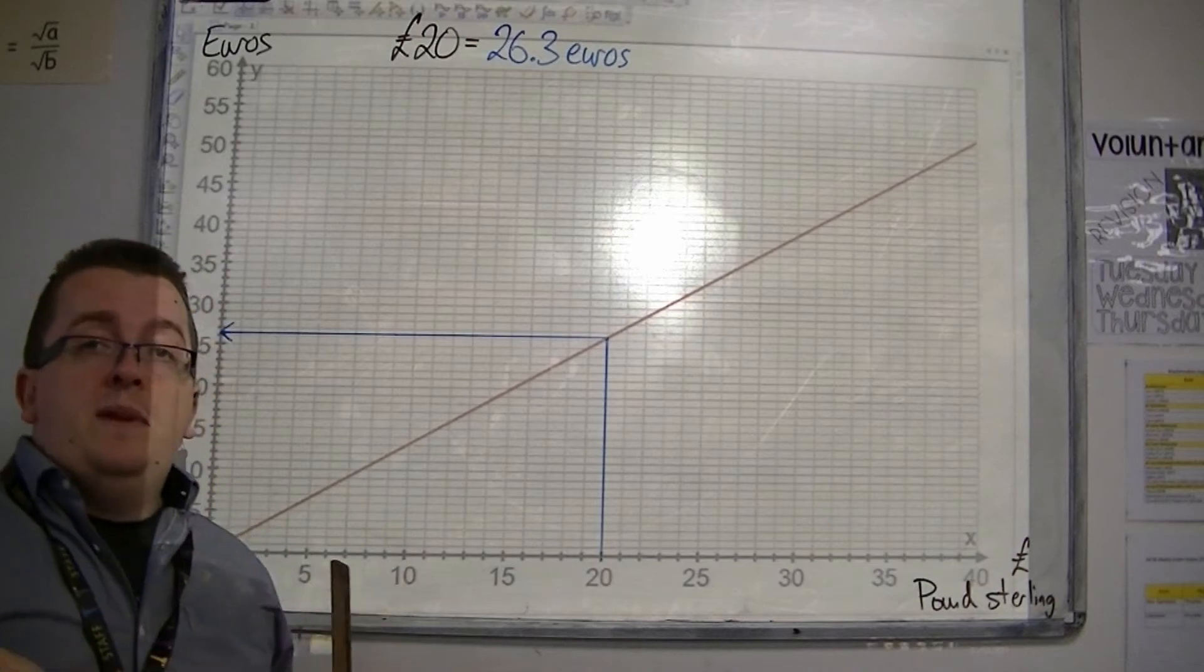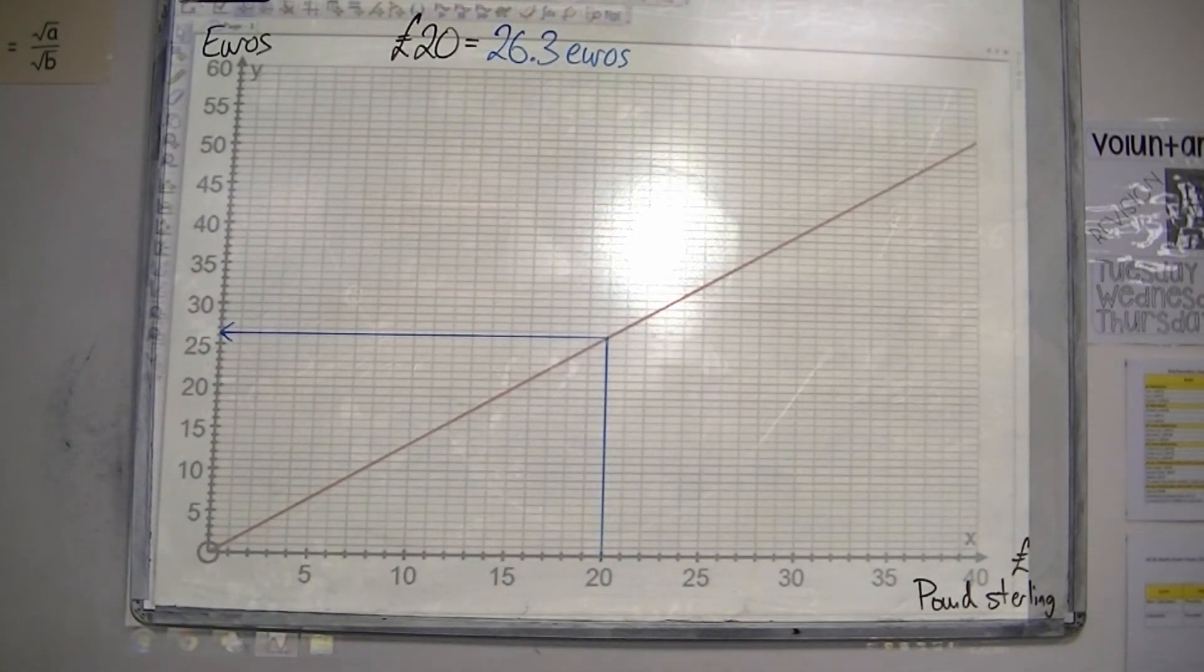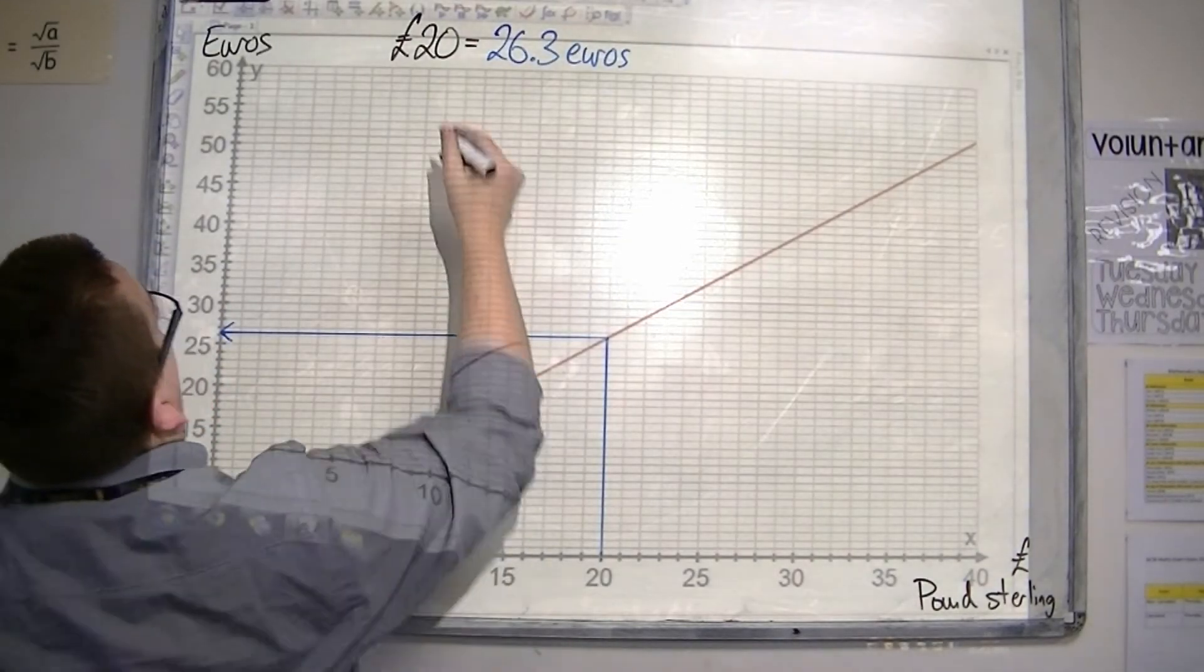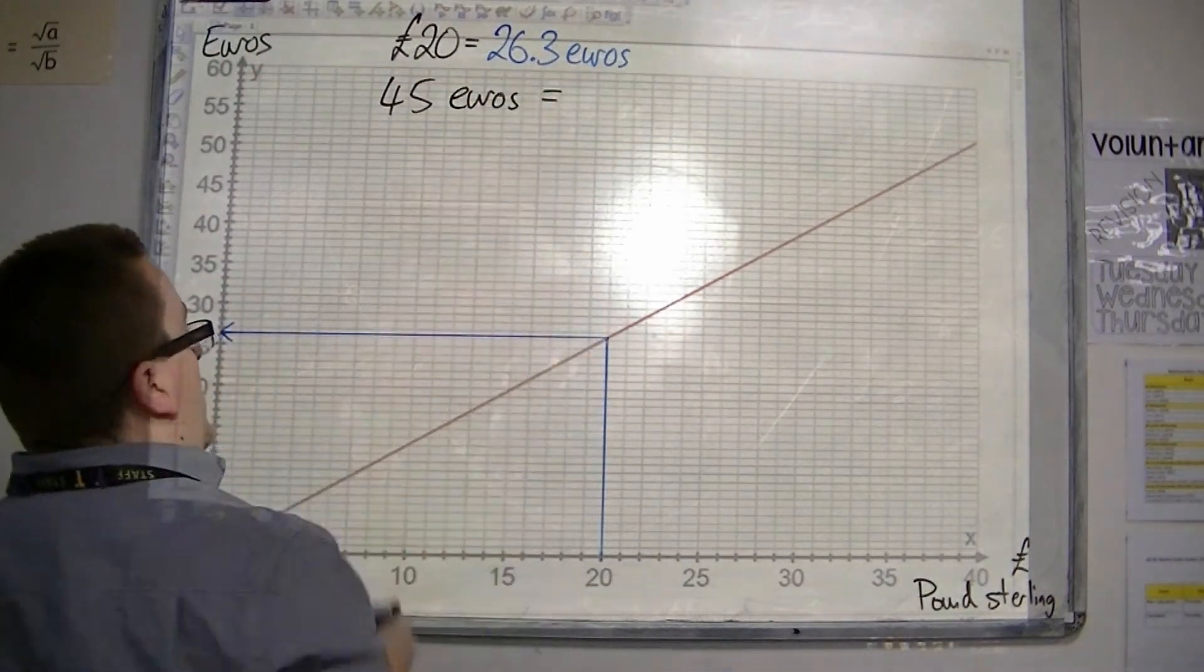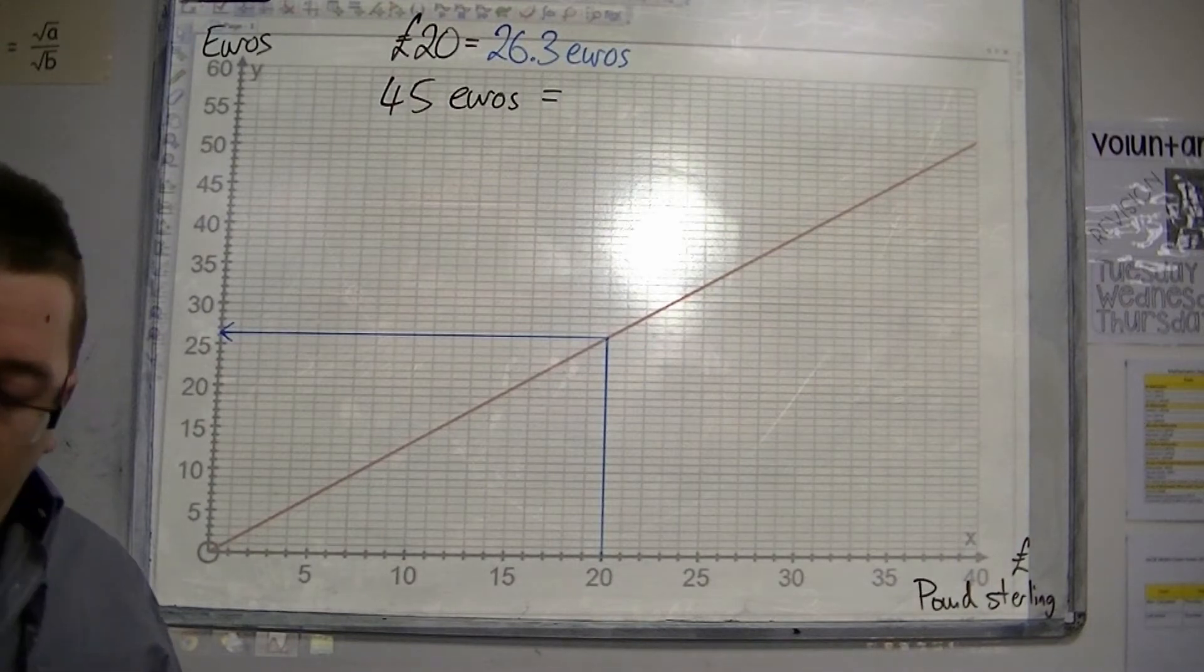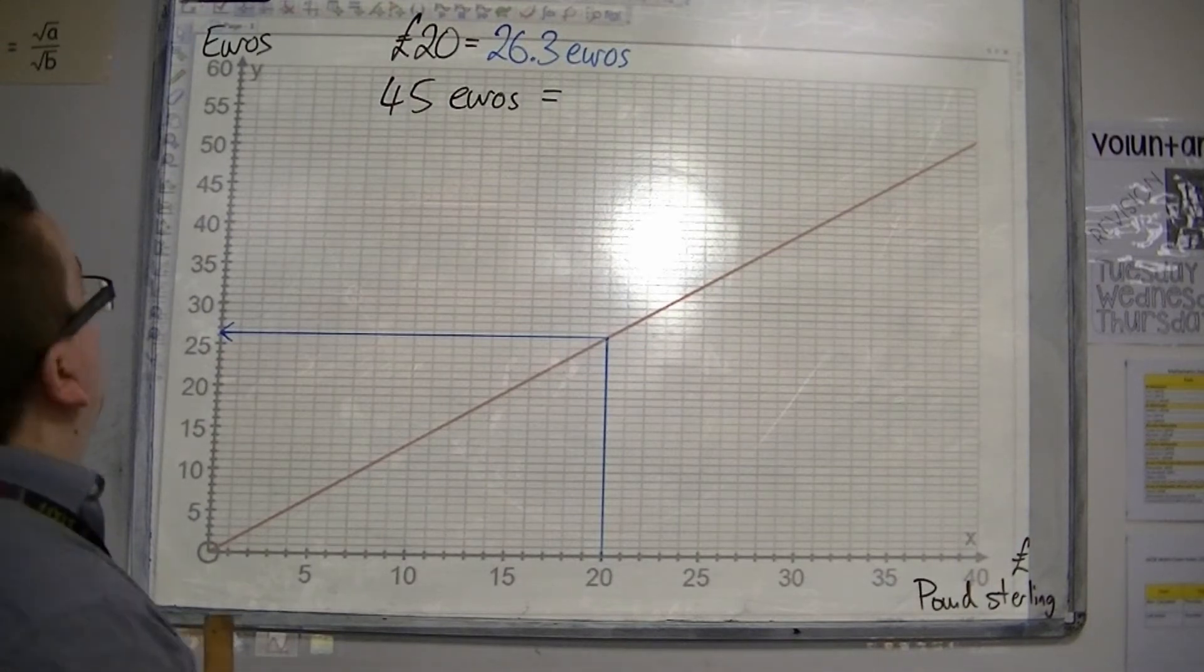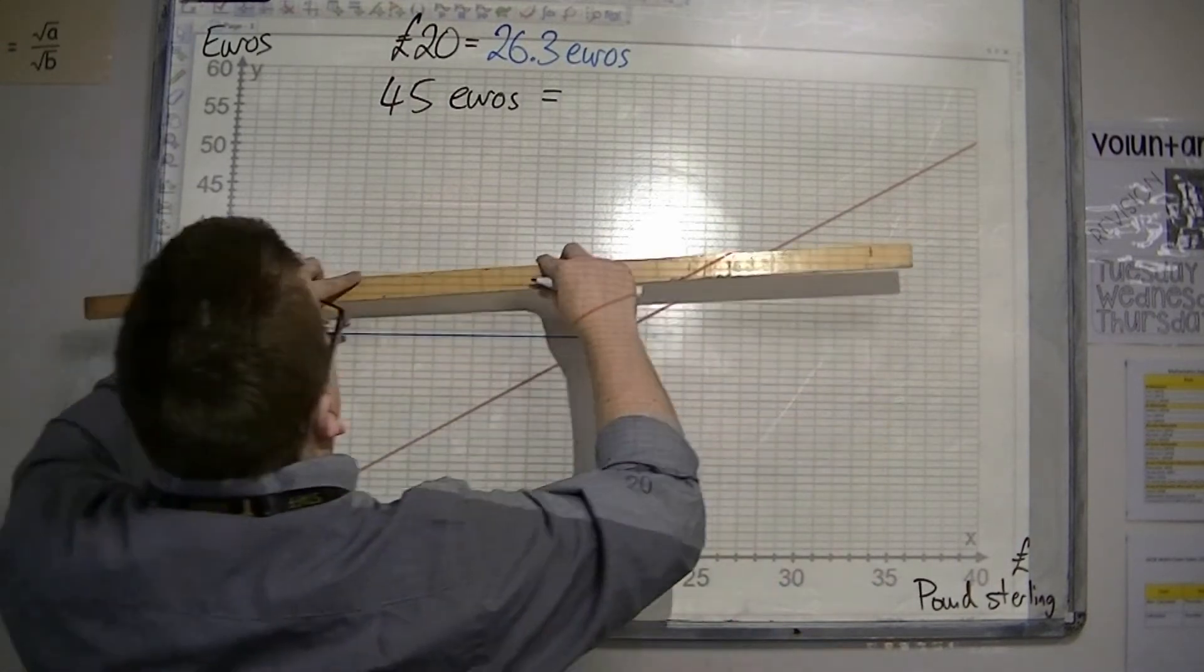Then, we also want to be able to reverse that and say, well, okay, what is 45 euros in pounds? So, from 45 in the euros,